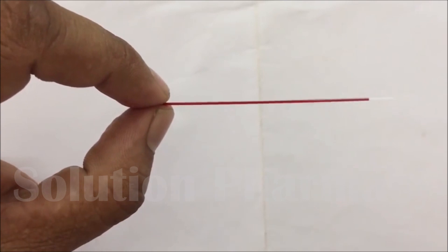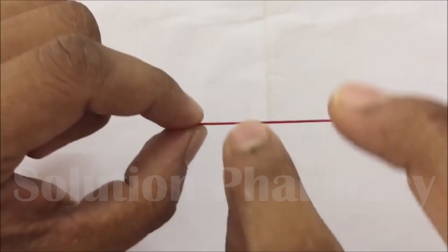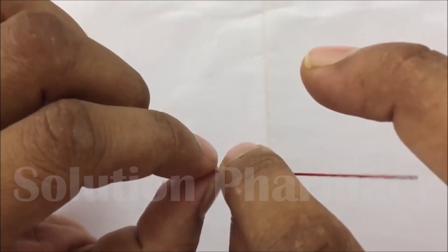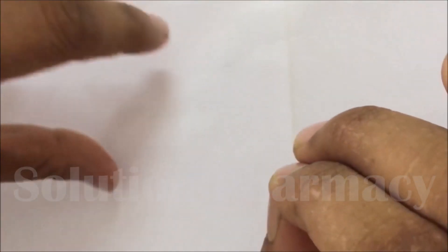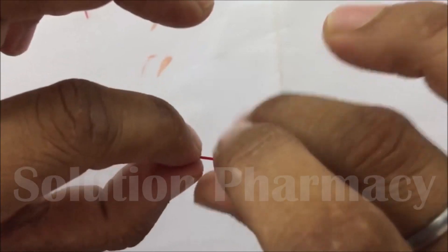Again wait for 30 seconds and cut a small piece of the capillary tube. Here you can see that blood is not clotted. We have to repeat this process at an interval of 30 seconds.